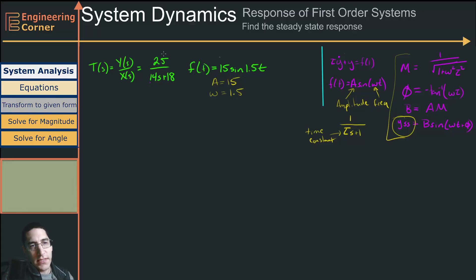But this transfer function doesn't look like it's in this form right now. So if I write this transfer function 25 over 14s plus 18, the first thing I'm going to do is factor out this 25. So I have 25 times 1 over 14s plus 18. I haven't changed anything, I just factored out the 25.